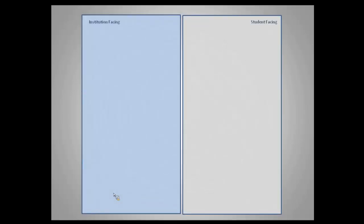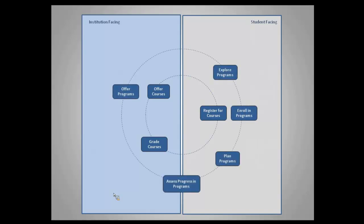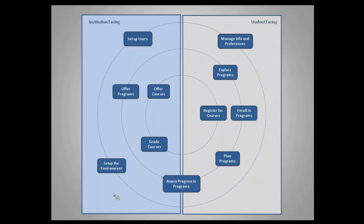Just a reminder of where course offering and related course functionality fits into the broader enrollment module scheme. We have an institution-facing portion of the module and a student-facing portion. At the center, the heart of enrollment — when people tend to think of enrollment, they think about the ability to offer courses by the institution, have students register in those courses, and then give students grades in those courses. And then we layer on program. The next stepping out is the program layer, which we'll deal with in the next module. And at the center of all this, which is the cross-cutting concept we'll deal with in module five, is the academic record, hold, and exemption.